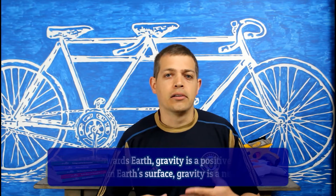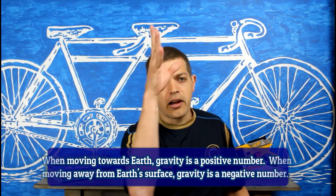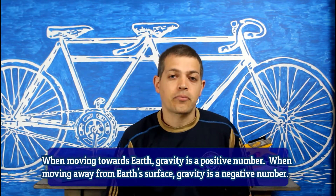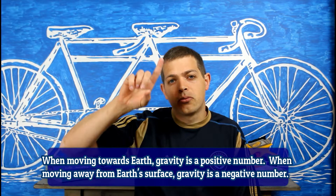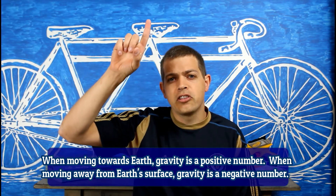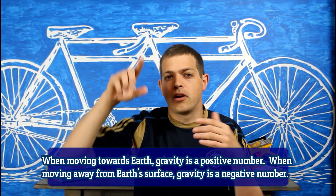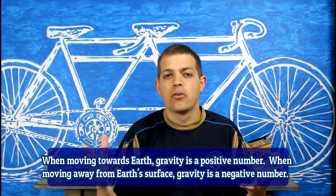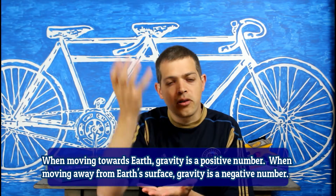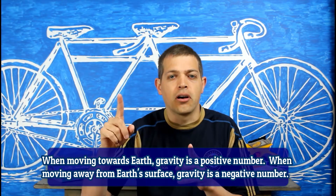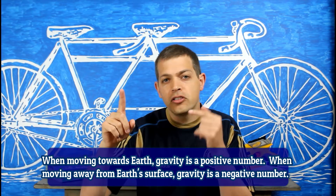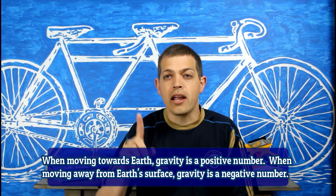Gravity can be a positive or a negative number. So if I were to throw a softball straight up in the air, as it's going up, gravity's pulling down. The net force is going to be pulling on the ball, so there are two forces going on. Eventually gravity's going to win over.